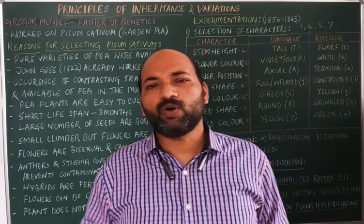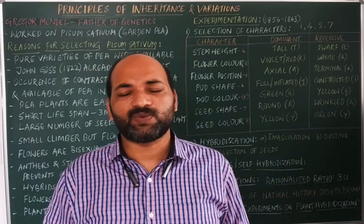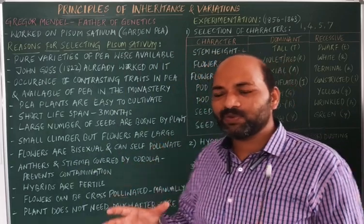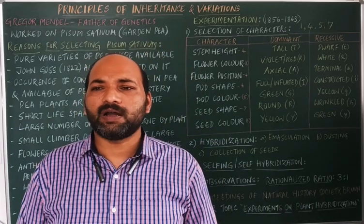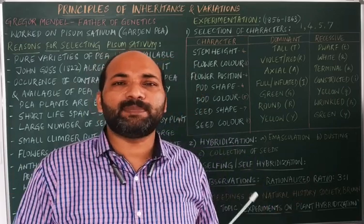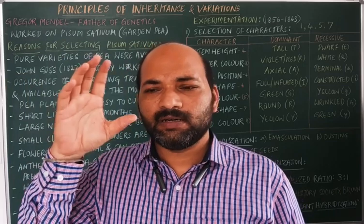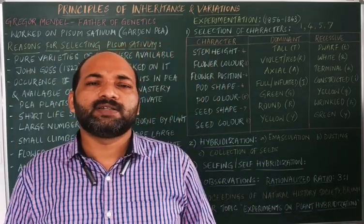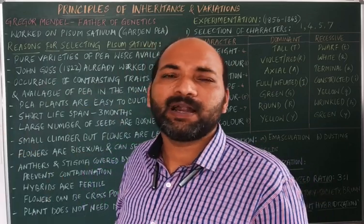On what basis did he conduct the experiments? As he had completed his studies in physics as well as botany, he thought of doing certain experiments on the plant which was available in the monastery. Soon after his schooling, he became a monk or a priest in a church. Surrounding that church, he observed there were a lot of pea plants. Since he had completed his graduation in botany, he started thinking he could make use of these plants and do various experiments.